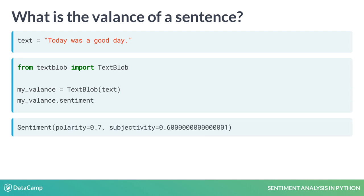The sentiment property returns a tuple. Polarity is measured on a scale from minus 1 to 1, where minus 1 is very negative, 0 is neutral, and plus 1 is very positive. Our example, 'today was a good day,' carries positive emotion and thus will have a positive polarity score of 0.7. The second element in the tuple displays the subjectivity, measured from 0 to 1, where 0 is very objective and 1 is very subjective. So our example is rather positive and subjective.